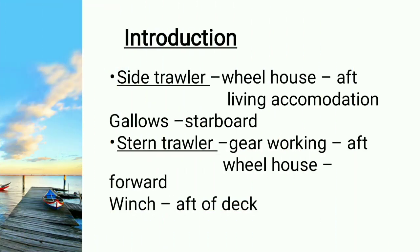Let's begin with the topic. Trawl nets are a type of net in which the main principle is that a bag net is towed through the water to filter out fishes. What we do in trawl net is we just pull the trawl through the water to filter out fishes. The mouth is kept open by means of a beam, or by otter boards, or vertically by means of floats and sinkers.